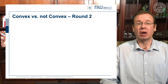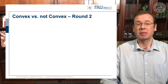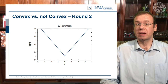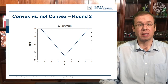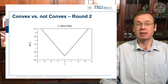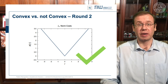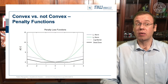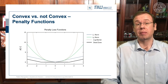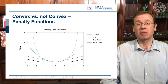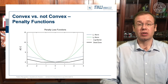Round two — convex versus not convex: the L1 norm. What do you think? Is it a convex function? Remember convexity: you connect two points of the plot and they always lie above the function — and it is convex again. We had quite a few of those penalty functions, and all of them are also convex. So these will help you in finding convex optimization problems if you like to use those norms — that is actually quite helpful. Those are also convex.